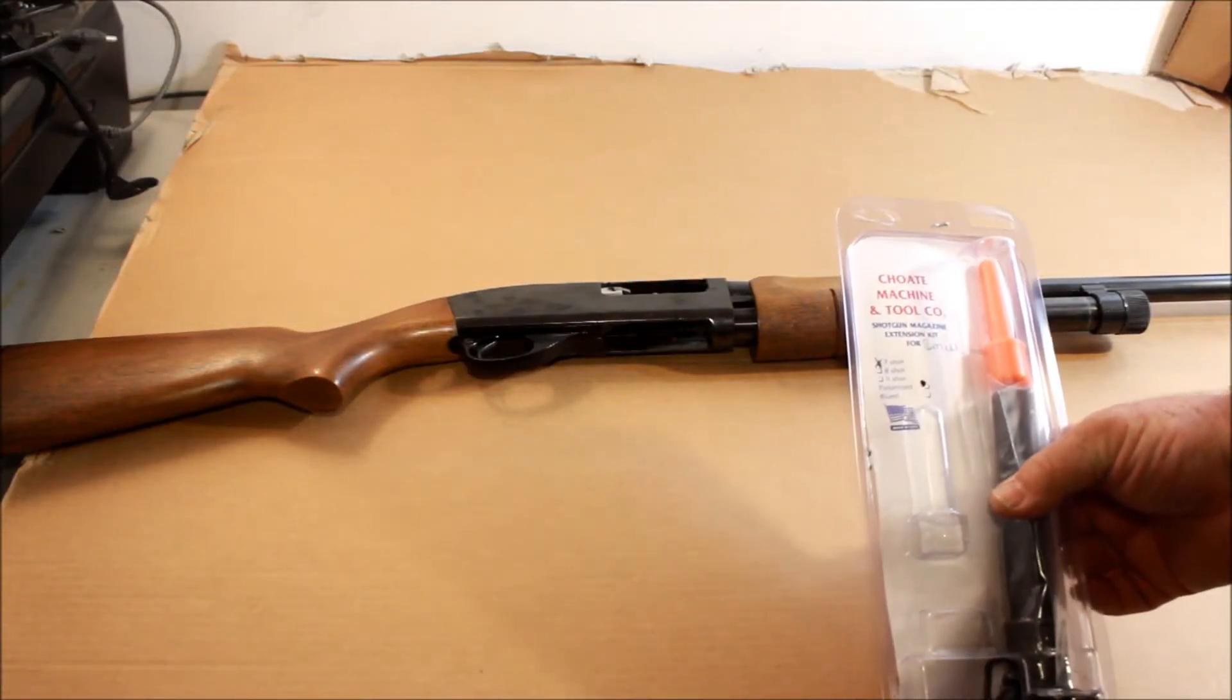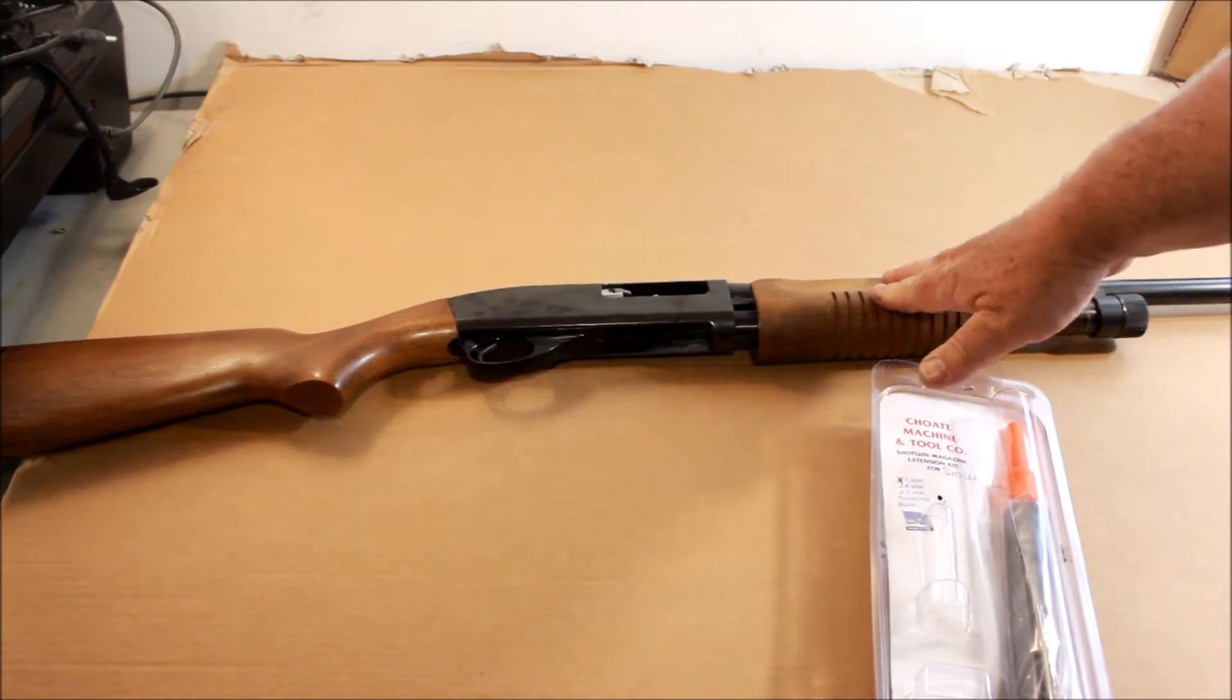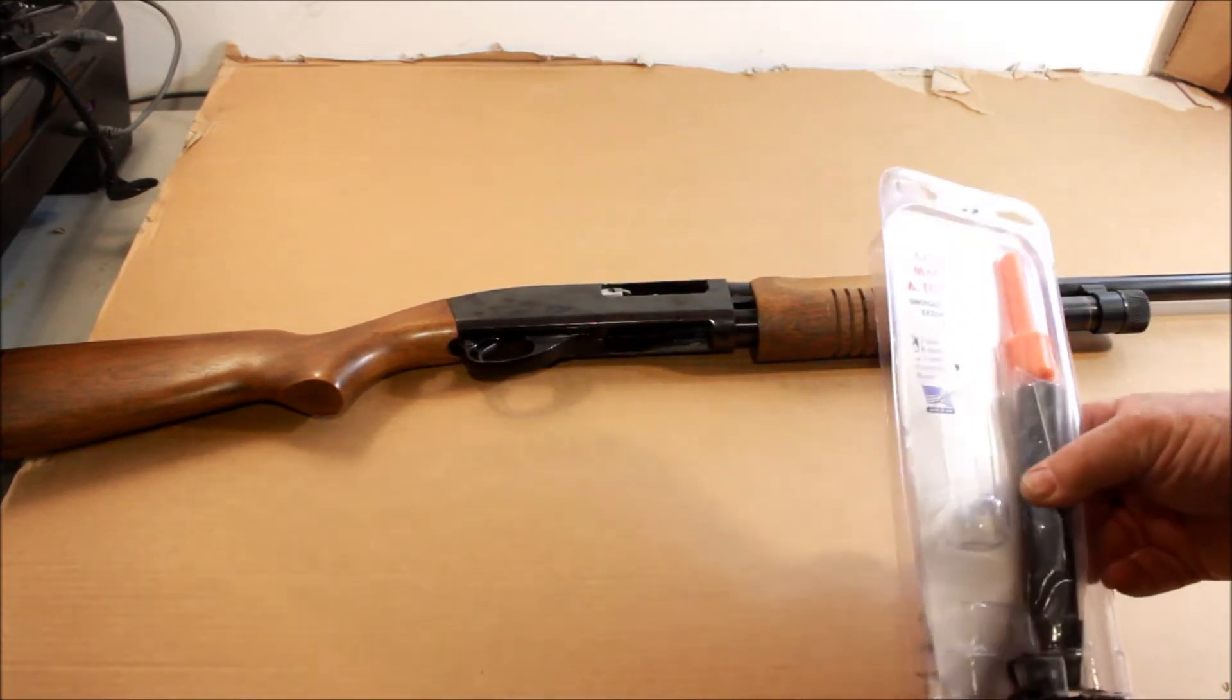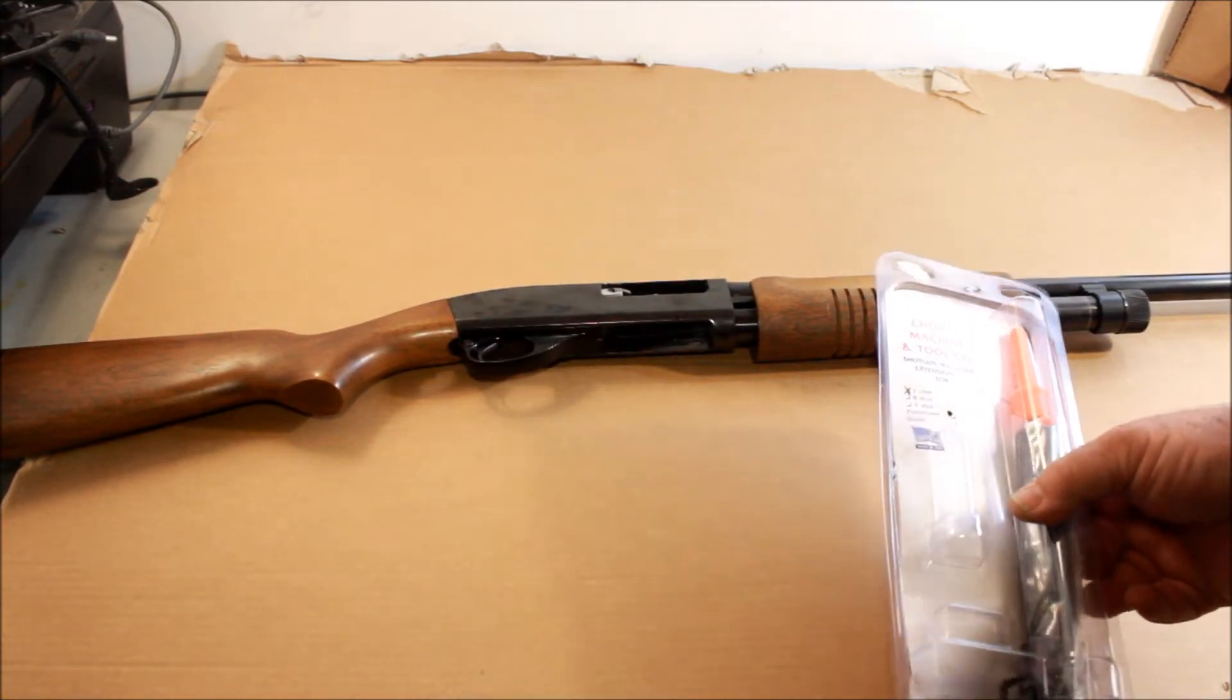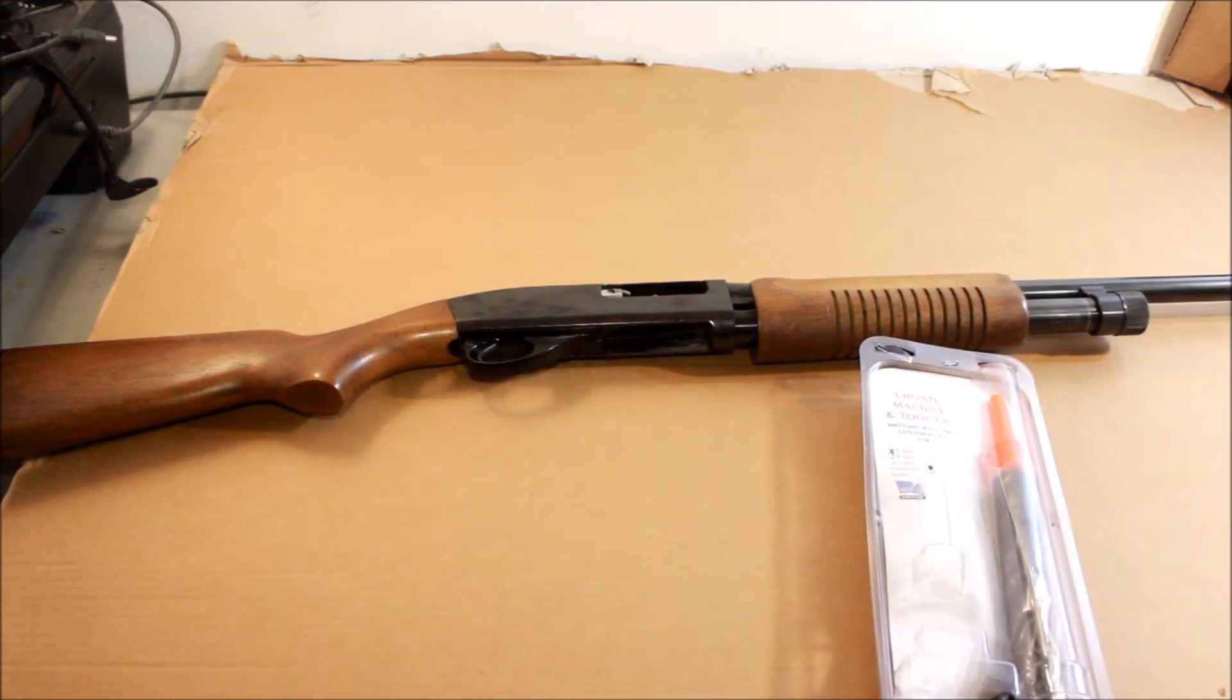Here we have a Choate Machine and Tool Company mag extension for the Smith & Wesson 3000. They stopped making these a while ago but started making them again, and I think it's because these shotguns are starting to hit the civilian market after being in police departments.